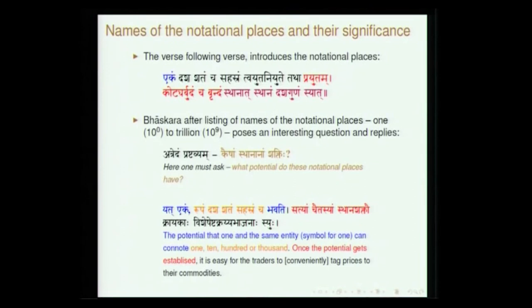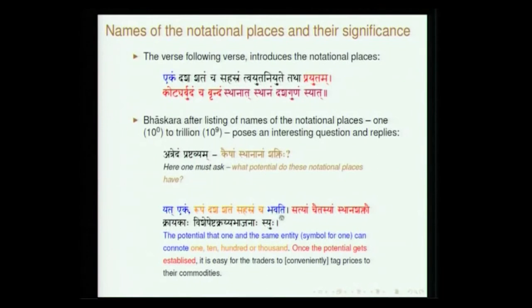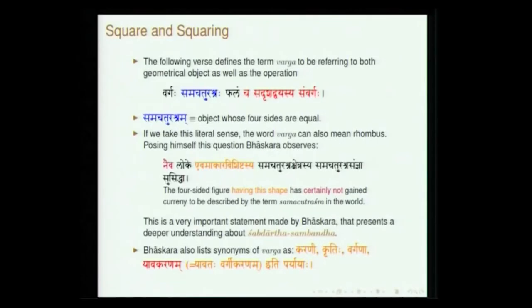This listing of names is extremely essential for deciphering numbers given by Aryabhata. Ekam dasha satam ca sahasram — sahasram is 1000; ayuta niyute — 10,000; niyuta is 1 lakh; prayutam, koti, arbudam, brindam, sthanath sthanam — up to 10 to the power 9. Names of the powers of 10 are listed. There is an interesting discussion by Bhaskara at this point: kaisham sthananam saktihi — what is the potential of these notational places? Saktihi means a certain potential. When you declare something, it has the potential to convey important meaning. He asks what purpose does it serve: so that you can price things by placing in that position — it serves a very useful purpose in day-to-day transactions.